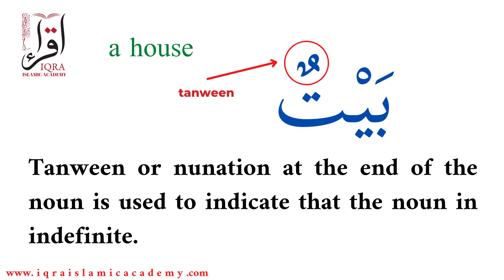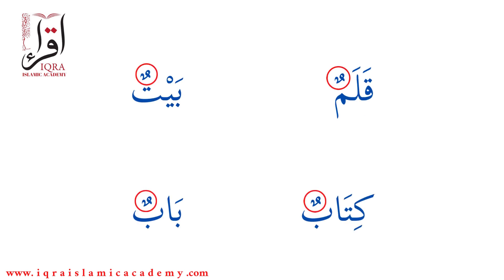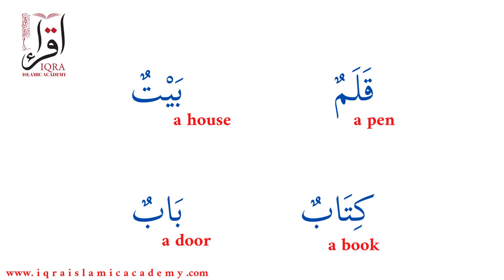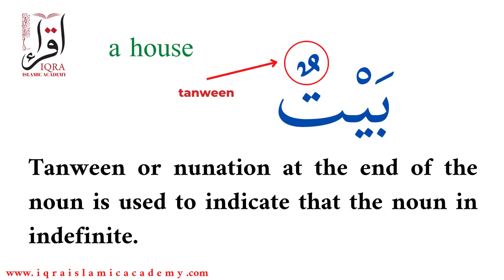Like we studied in the previous lessons: kolamun, kitabun, baitun, babun. You can see that there is tanwin at the end, and we translated them as 'a pen', 'a book', 'a house', 'a door'. We translated them with the indefinite article 'a' because of the rule we studied today — that tanwin or nunation at the end of a noun indicates that the noun is indefinite.